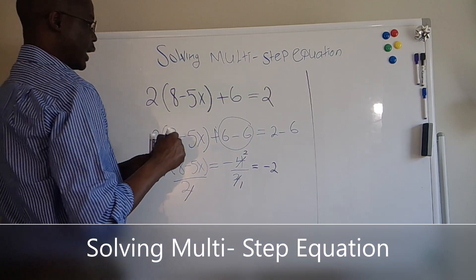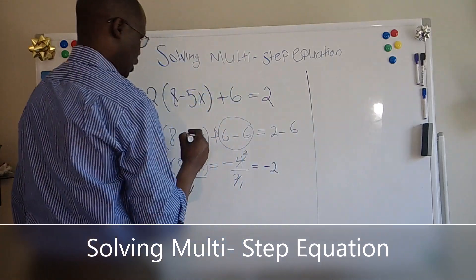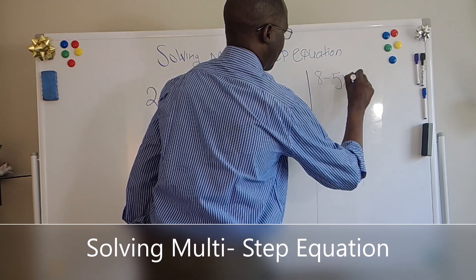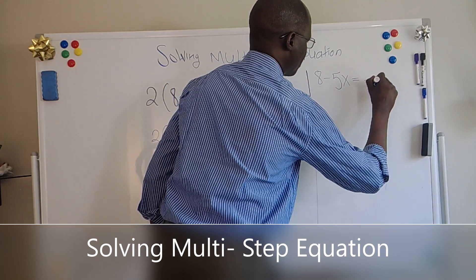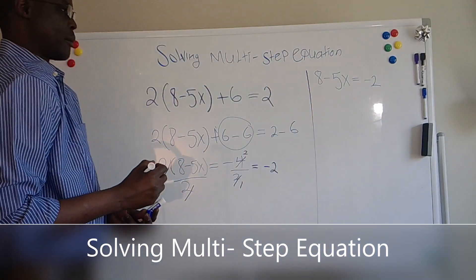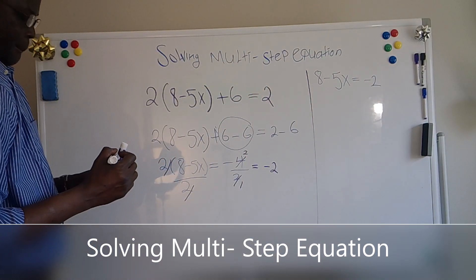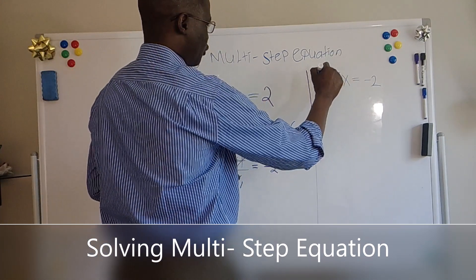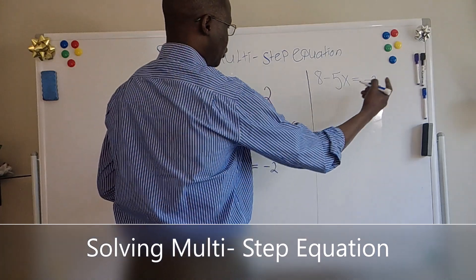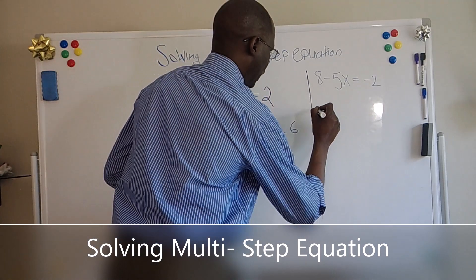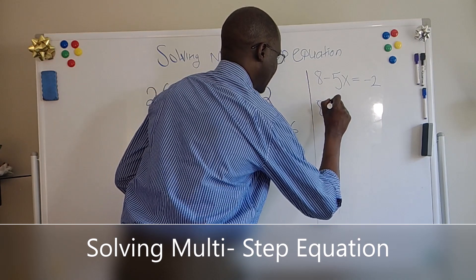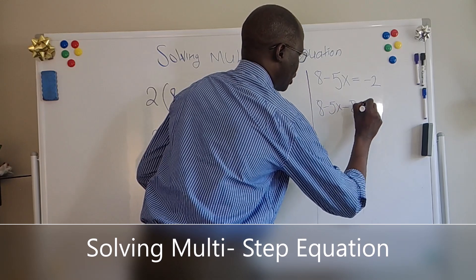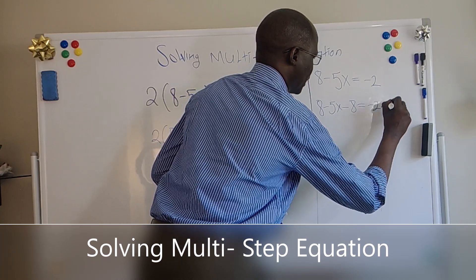Now, what's left here, it'd be 8 minus 5X equals minus 2. Next step, we're going to subtract 8 from both sides of the equation. It will equal 8 minus 5X minus 8 equals minus 2 minus 8.